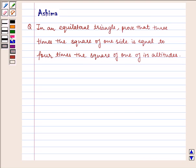Hello and welcome to the session. Let us understand the following question which says, in an equilateral triangle, prove that three times the square of one side is equal to four times the square of one of its altitudes.